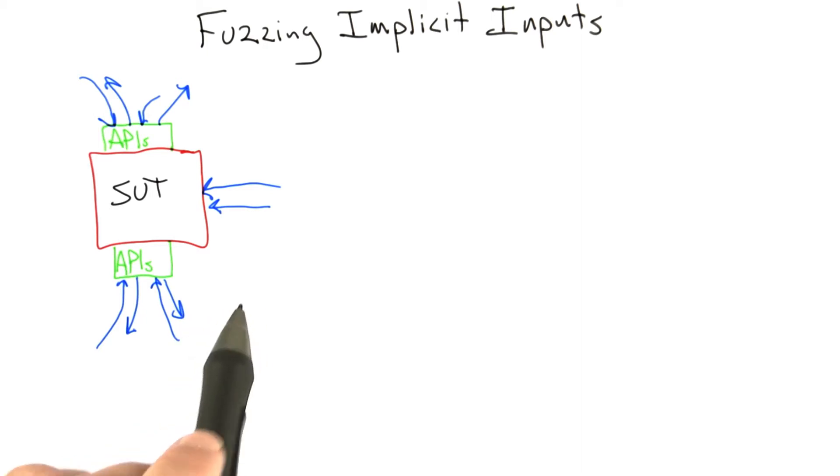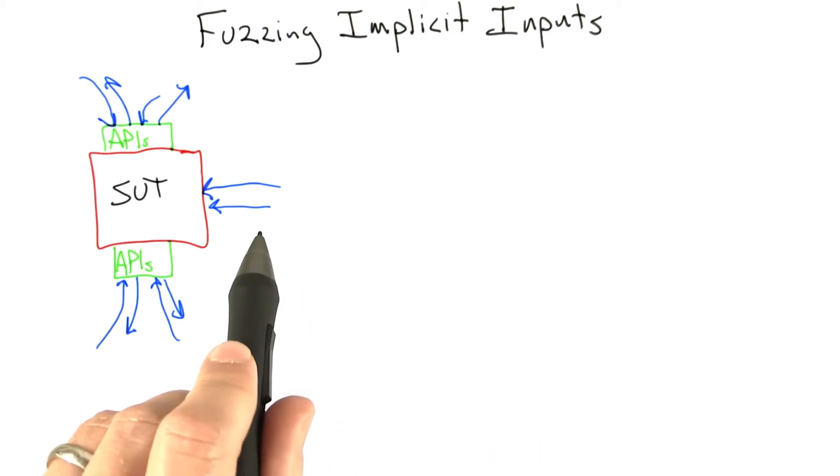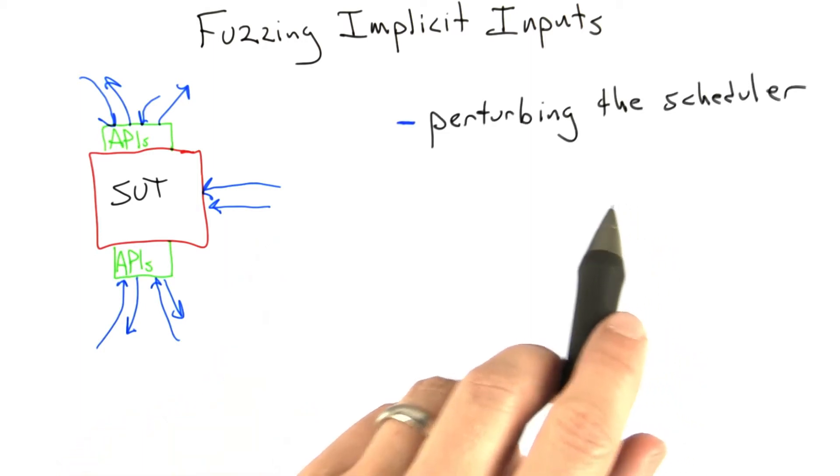As we mentioned earlier, possibly the most important implicit input is the timing at which different threads are run on different processors. That is to say, the thread scheduler provides a very important form of implicit input to multi-threaded software under test. An extremely important technique is perturbing the schedule.